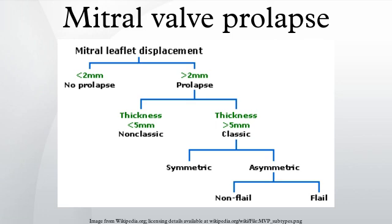Rheumatic fever is common worldwide and responsible for many cases of damaged heart valves. Chronic rheumatic heart disease is characterized by repeated inflammation with fibrinous resolution. The cardinal anatomic changes of the valve include leaflet thickening, commissural fusion, and shortening and thickening of the tendinous cords. The recurrence of rheumatic fever is relatively common in the absence of maintenance of low-dose antibiotics, especially during the first three to five years after the first episode. Heart complications may be long-term and severe, particularly if valves are involved. While rheumatic fever has become less common in developed countries since the advent of routine penicillin administration for strep throat, valvular disease from undertreated rheumatic fever continues to be a problem in the older generation and in much of the less developed world.